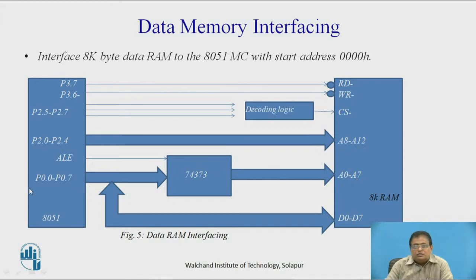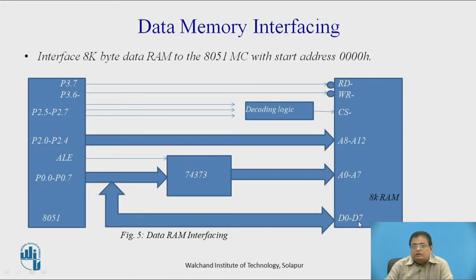Port 0 is providing the lower address bits as well as the data bits, so it has the alternate function of AD0 to AD7. Port 2 is providing the higher 8 bits of the 16-bit address, that is from A8 to A15. From P2.0 to P2.5, that is A8 to A12, are directly connected to the higher address pins of the memory, and lower 8 address bits to the A0 to A7 pins. The data pins — port 0 — is connected to the data pins of the external memory. Port 0 is providing both address as well as data, and these are separated by making use of the latch signal.